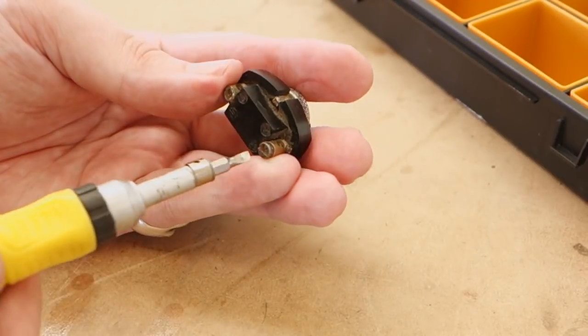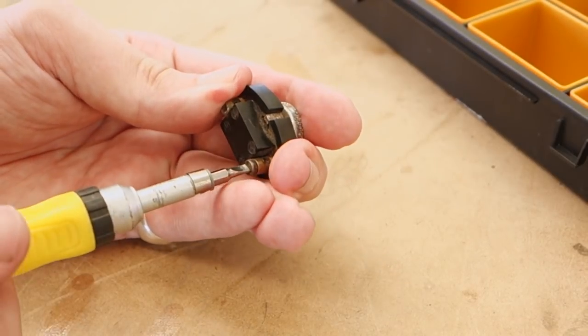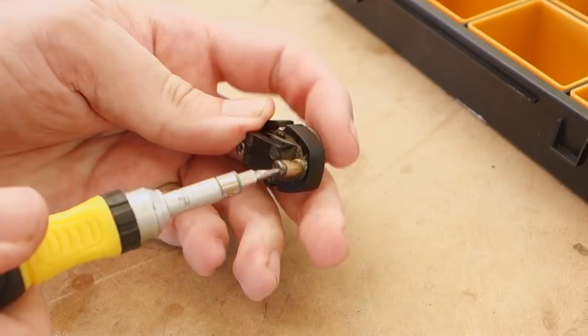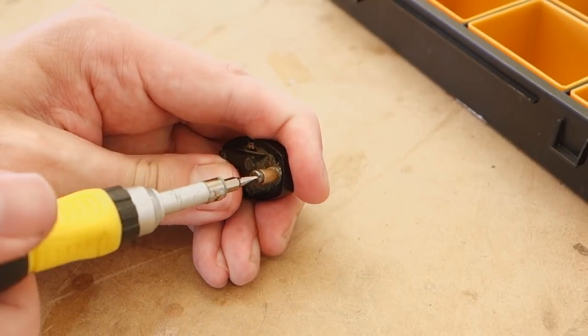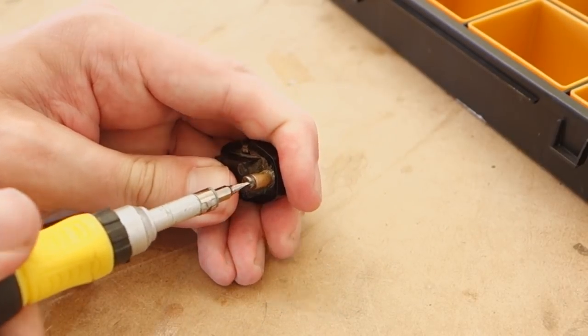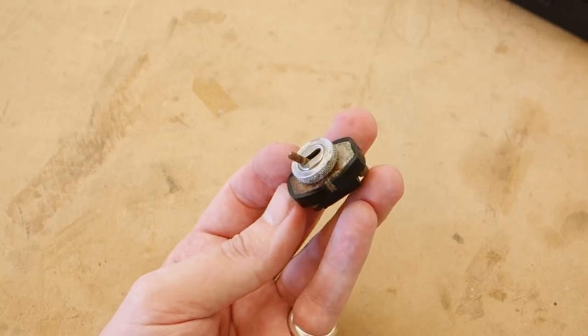The nut and one of the contact screws on one of the switches was just not budging at all. Considering how corroded this switch is, it's likely seen some damp conditions and corrosion has thus crept into the threads.